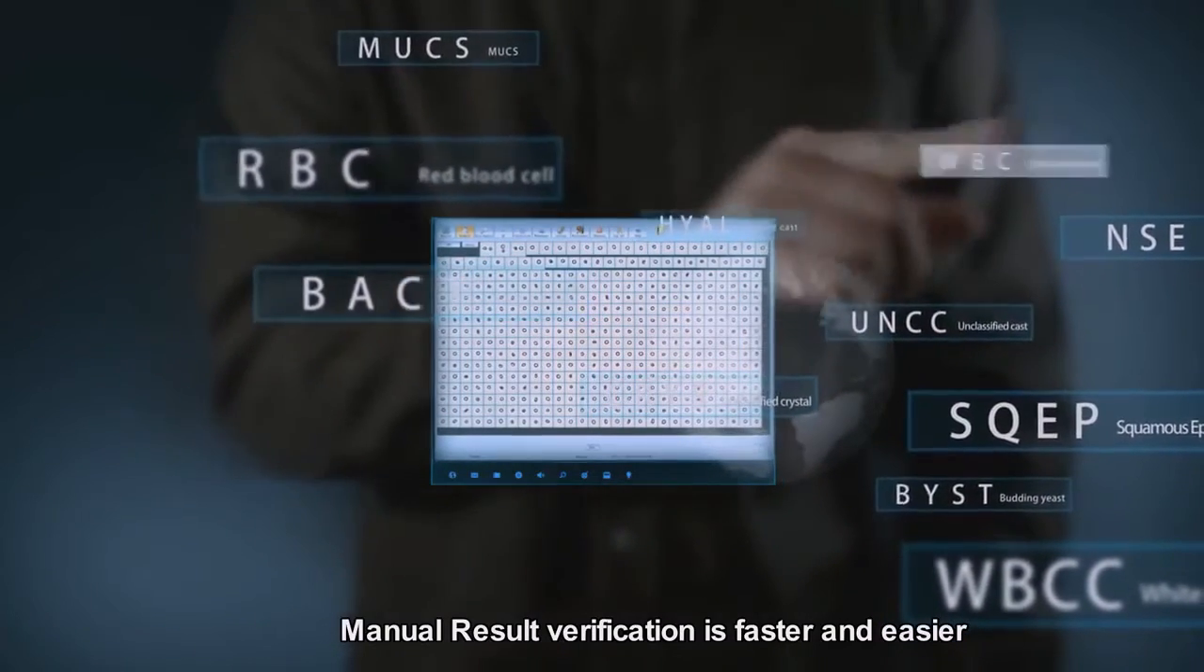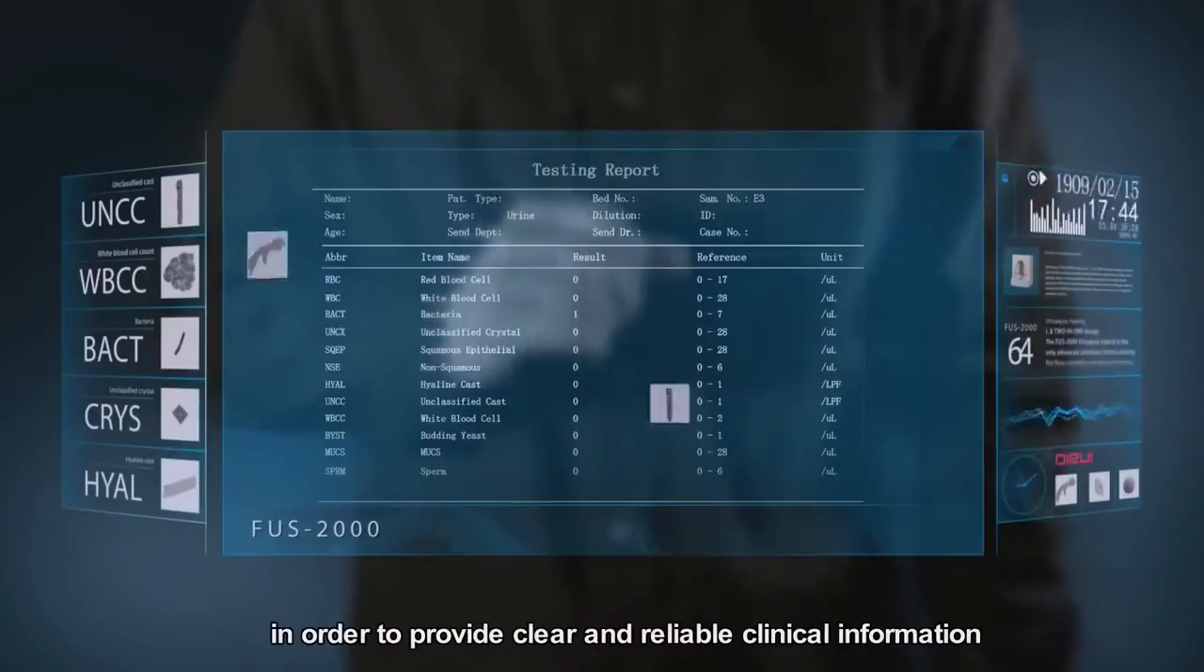Accurate test results. Real sediment images ensure urine-formed elements can be easily identified and verified. Manual result verification is faster and easier with real images generated through advanced software morphology identification technology. Result reports integrate information and images in order to provide clear and reliable clinical information.